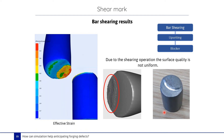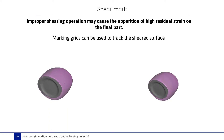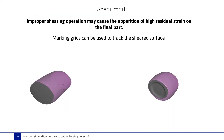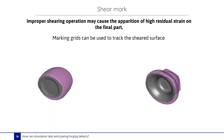Improper shearing operation may cause the occurrence of high residual strain on the final part. A marking grid can be used to track the shear surface. Here we see the marking grid used to track the shear surface — in gray, the marking grid on the shear surface. We follow this marking grid as well in the next forging operation at the blocker stage.